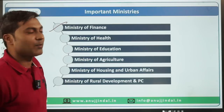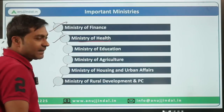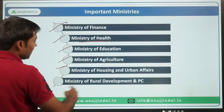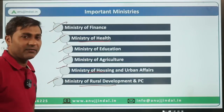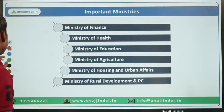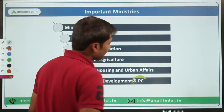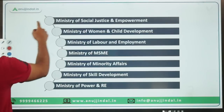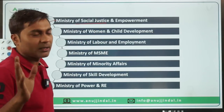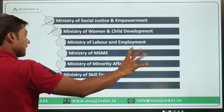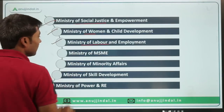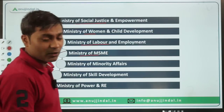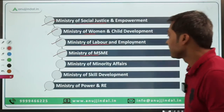Ministry of Health, which is directly connected to ESI; Ministry of Education; Ministry of Agriculture; Ministry of Housing and Urban Affairs; Ministry of Rural Development and Panchayati Raj — where major schemes like Swamitva come from; Ministry of Social Justice and Empowerment; Ministry of Women and Child Development; Ministry of Labour and Employment — all very very important ministries.